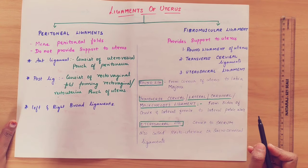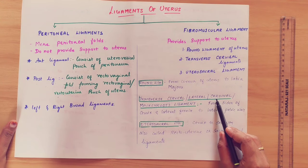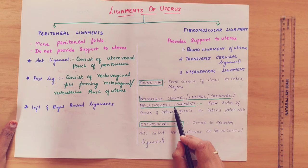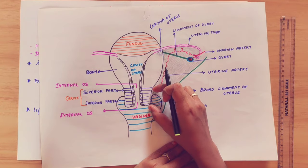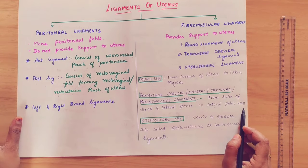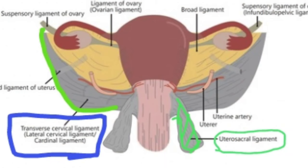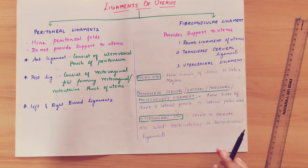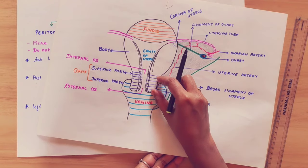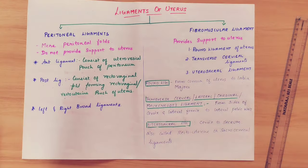The transverse cervical ligament — also known as the lateral ligament or cardinal ligament — is the next fibromuscular ligament. This is followed by the utero-sacral ligament, which is also known as the recto-uterine or sacro-cervical ligament.